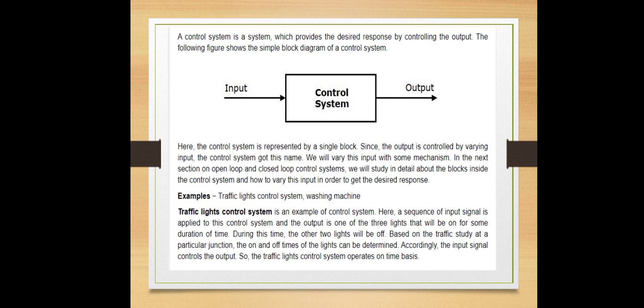The input signal controls the output, so the traffic light control system operates on time basis. There is not a universal time duration for traffic light signal. In our city also there are some traffic signals which are for duration 30 seconds, some are of 1.5 minutes, and some are of 1 minute. It depends upon the traffic scenario at a particular junction.